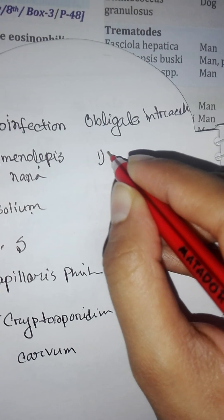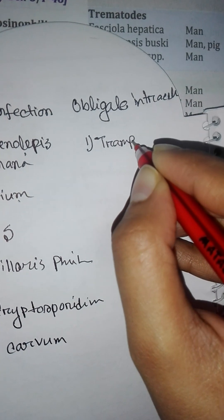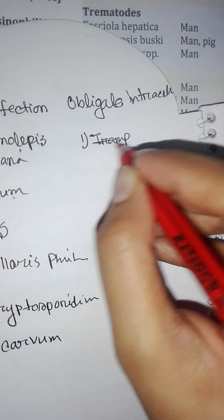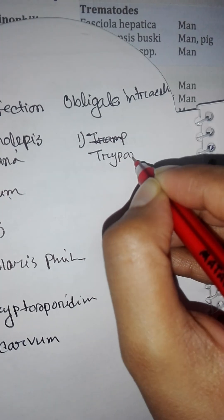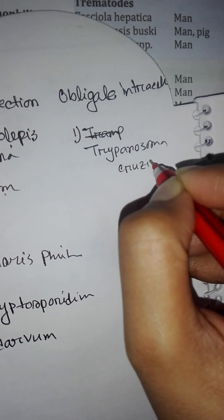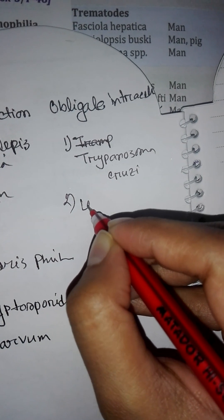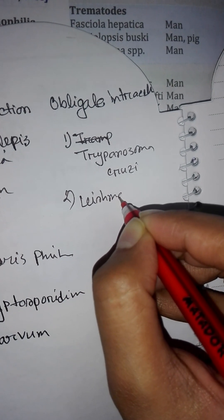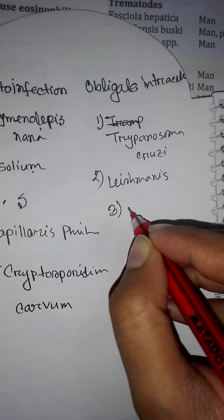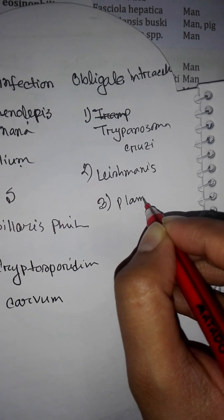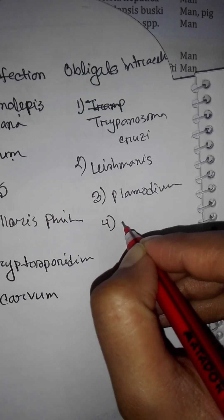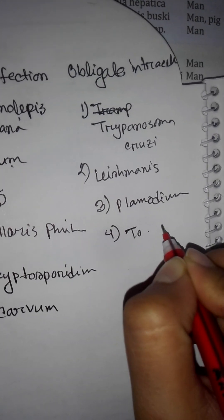Obligate intracellular: Trypanosoma cruzi, then Leishmania, third is Plasmodium vivax, falciparum, then Toxoplasma gondii.